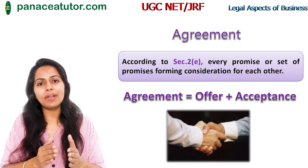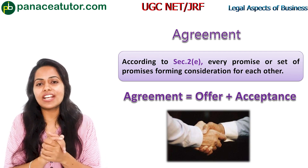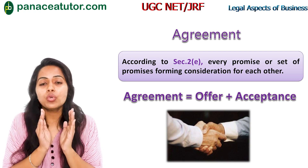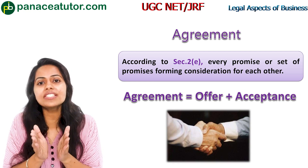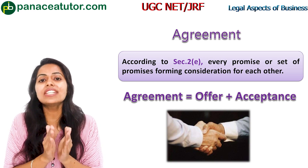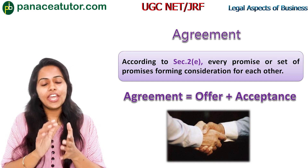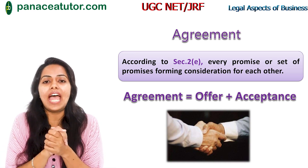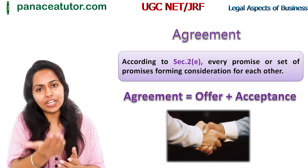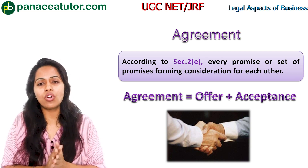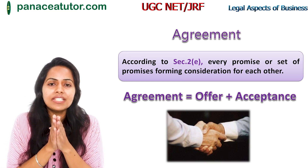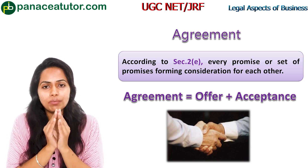The next term is agreement. According to Section 2(e), every promise or set of promises forming consideration for each other is known as an agreement. Agreement = Offer + Acceptance. If the packet of Maggi is available, the shopkeeper accepts your offer — that is an agreement. If it is not available, there is no acceptance and therefore no agreement. Note that for an agreement you also need consideration — something in return. You pay for the Maggi packet and then receive it.